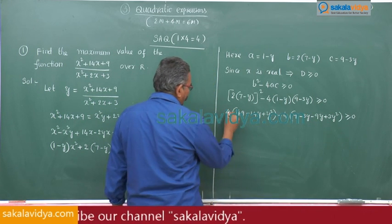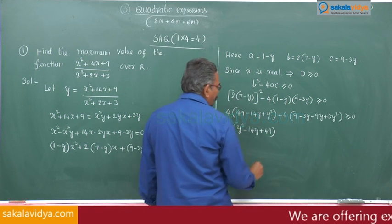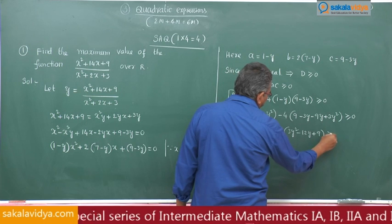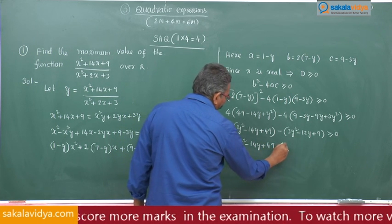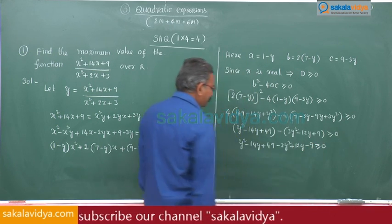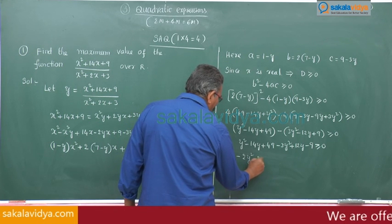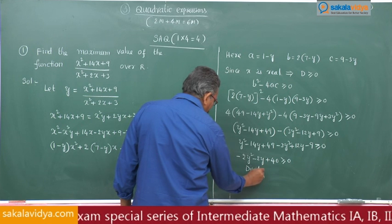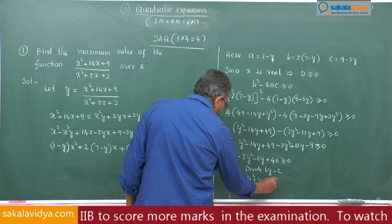Dividing throughout by 4: (y² − 14y + 49) − (3y² − 12y + 9) ≥ 0, which simplifies to −2y² − 2y + 40 ≥ 0. Dividing by −2 (inequality sign changes): y² + y − 20 ≤ 0.